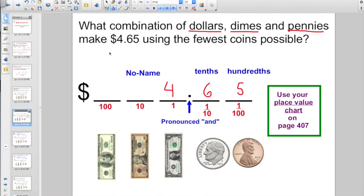They're not worried about quarters or nickels, are they? So, now that we know that, it's actually pretty easy. How many dollars, dimes, and pennies do you need? Four dollars, six dimes, and five pennies.